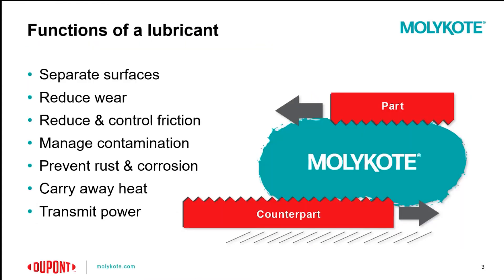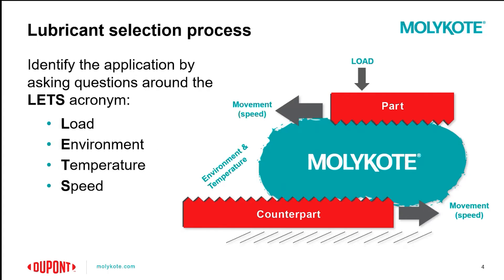The function of a lubricant is to separate two contacting surfaces and, as a result, reduce friction. The lubricant can also manage contamination, prevent rust and corrosion, as well as carry away heat and transmit power. To define the application, we follow the LUTS acronym, which includes load, environment, temperature, and speed. Defining these parameters allows us to specify the correct lubricant for any given application.